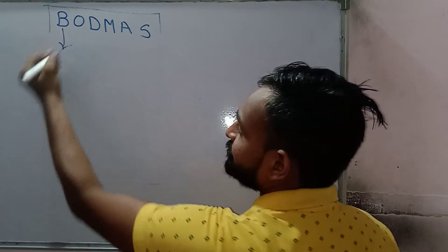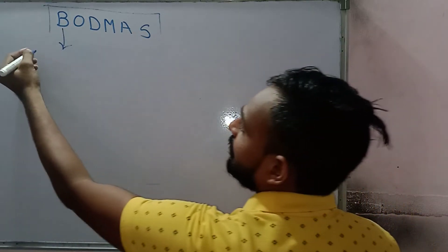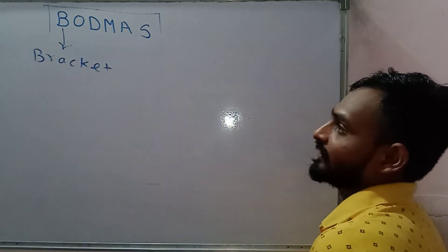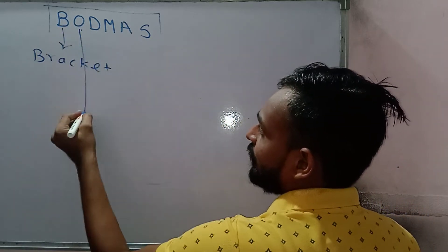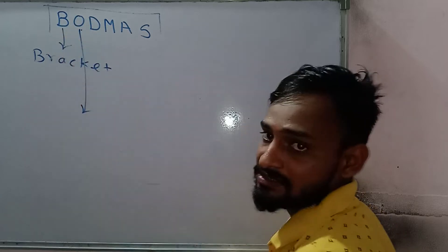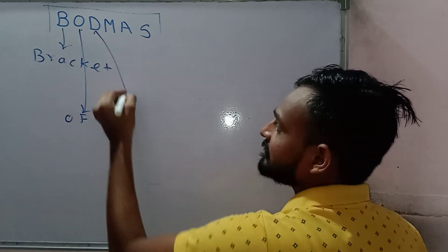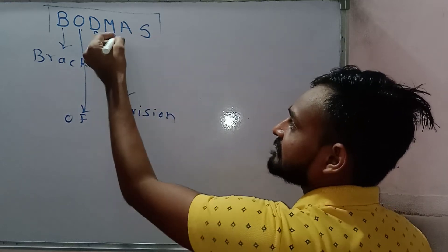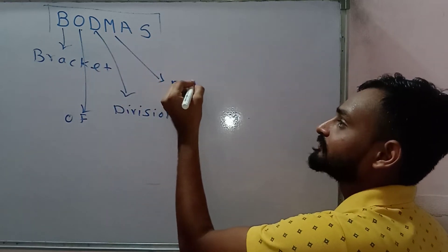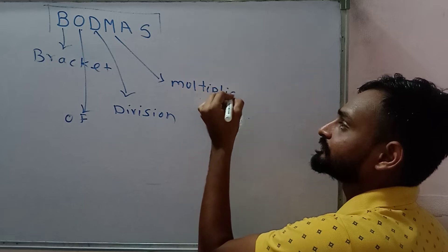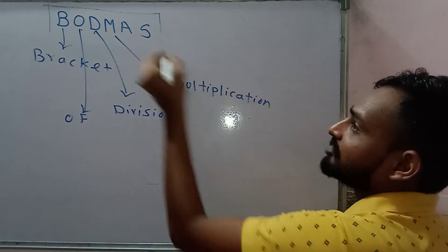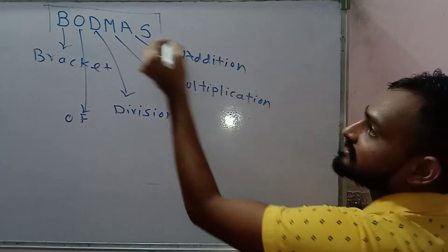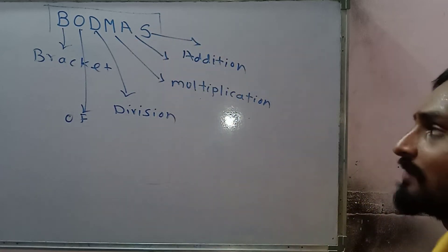First of all, B stands for Bracket. Then, O stands for Of. D stands for Division. Then M is for Multiplication. Thereafter, A is for Addition. And at last, S is for Subtraction.